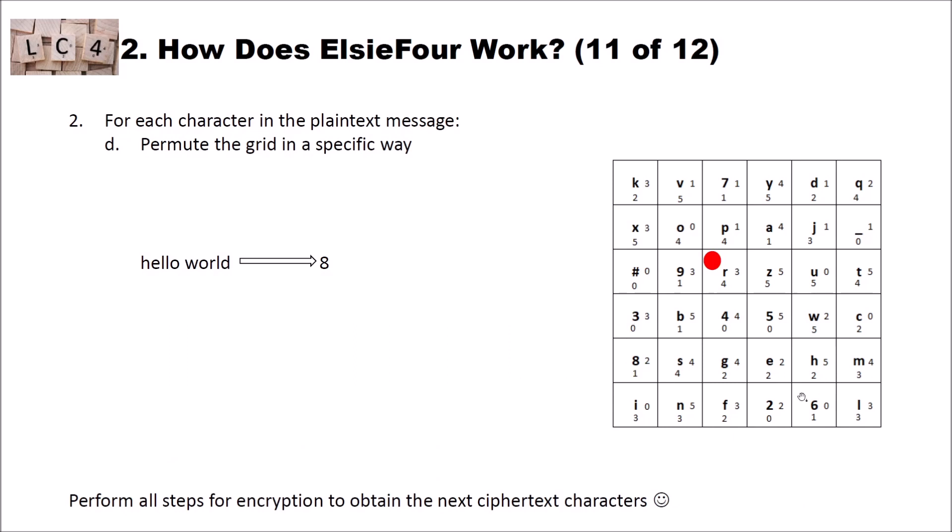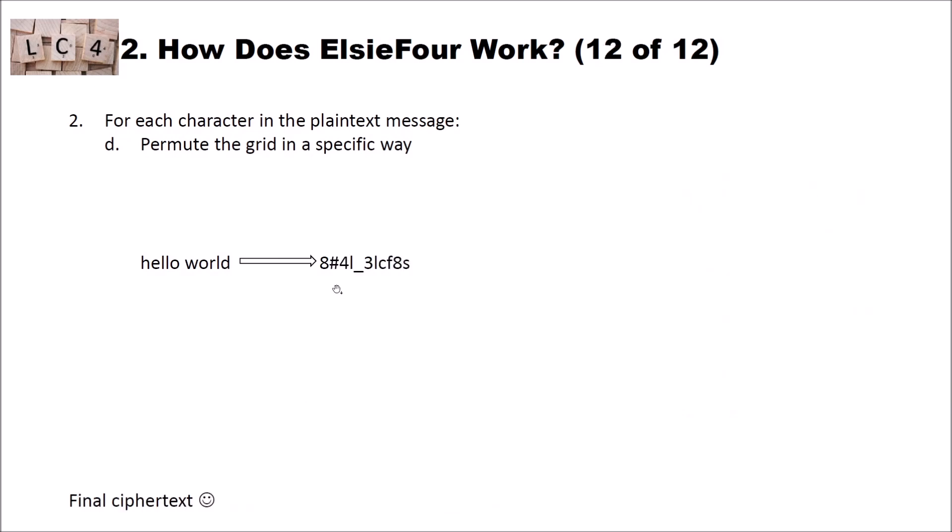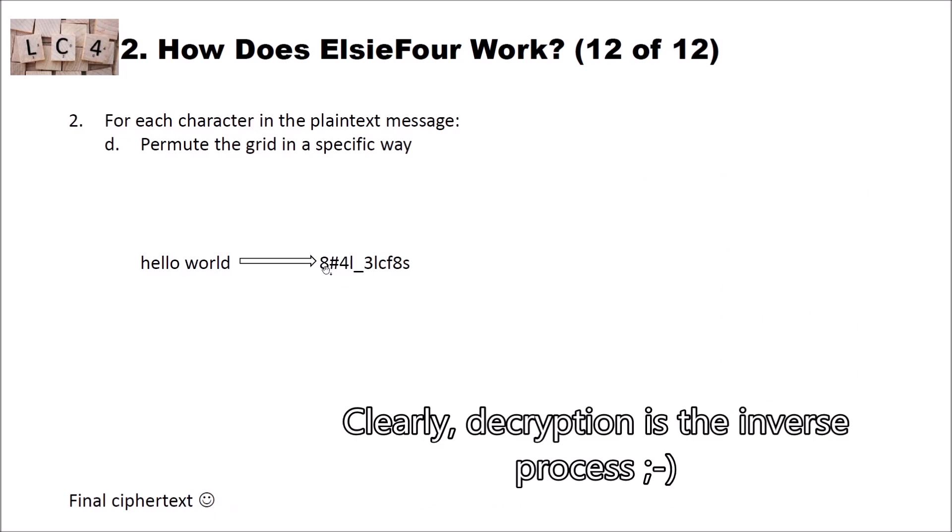Now we have a new state of the grid that can be used for encryption of the next characters. And we perform again all steps for encryption to obtain the next ciphertext characters. In this video, I just skip forward. We perform the same steps. And when we encrypt hello world, we get 8 hash 4 L underscore 3 L C F 8 and S. And this space here internally is replaced by an underscore prior to encryption.